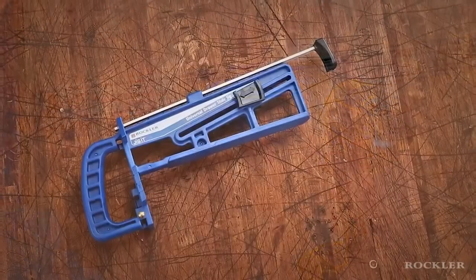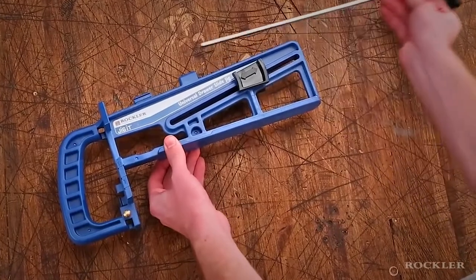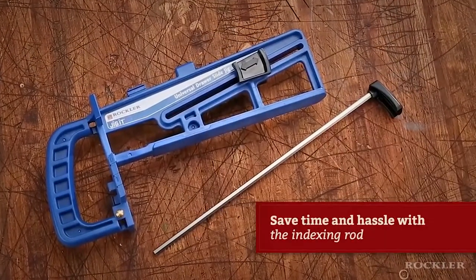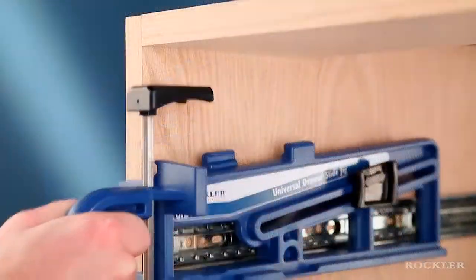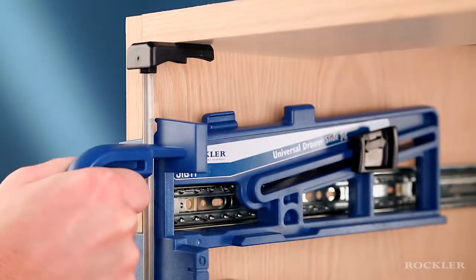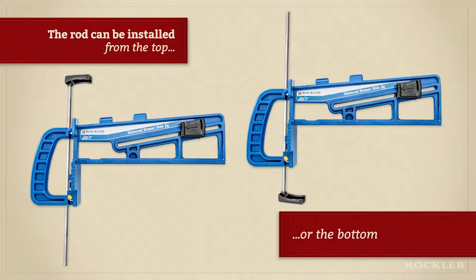If you need to install multiple slides at the same height, this jig will save you a lot of time and the hassle of measuring at each location. It features an indexing rod that lets you register the slide off of a reference surface on the cabinet. The rod can be installed from the top or bottom of the jig, depending on the location of the reference surface.